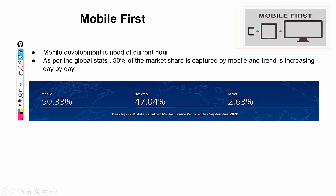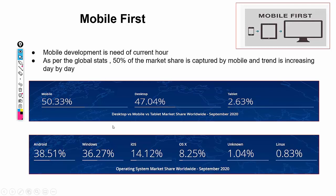That's why mobile testing is in place. Looking at the division of mobile traffic: 38.51% is coming from Android, Windows is about 36% (desktop and laptops using Windows), iOS is 14.12%, Mac is 8.25%, unknown resources 1.04%, and Linux 0.83%. It's clear that mobile usage is increasing day by day, and a large portion of mobile traffic comes from Android.